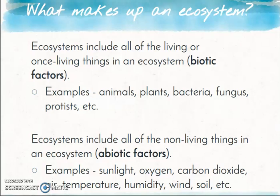Now let's look inside an ecosystem at the biotic factors. An ecosystem includes all of the living and once-living things — we call those the biotic factors. 'Bio' meaning life, and 'factors' meaning things. So all the living things in an ecosystem — animals, plants, bacteria, fungus, protists. It also includes things that are dead but were once living, such as dead trees or a dead animal.